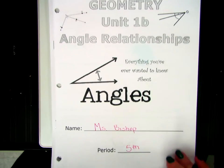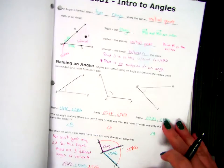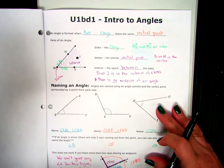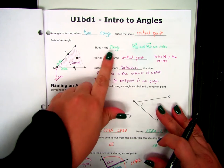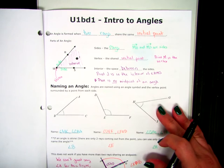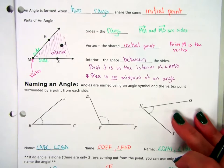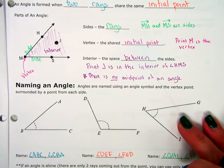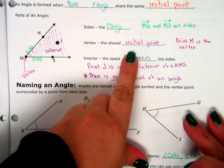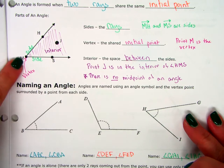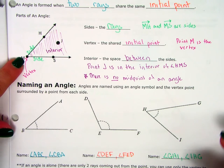So for day one, it was just kind of an intro to angles. You've seen a lot of it before, but it's been a long time. We talked about that an angle is just two rays that share an initial point. The sides are the rays. So ray MH, ray MS, those are my sides. Your initial point is called the vertex. So point M is the vertex.